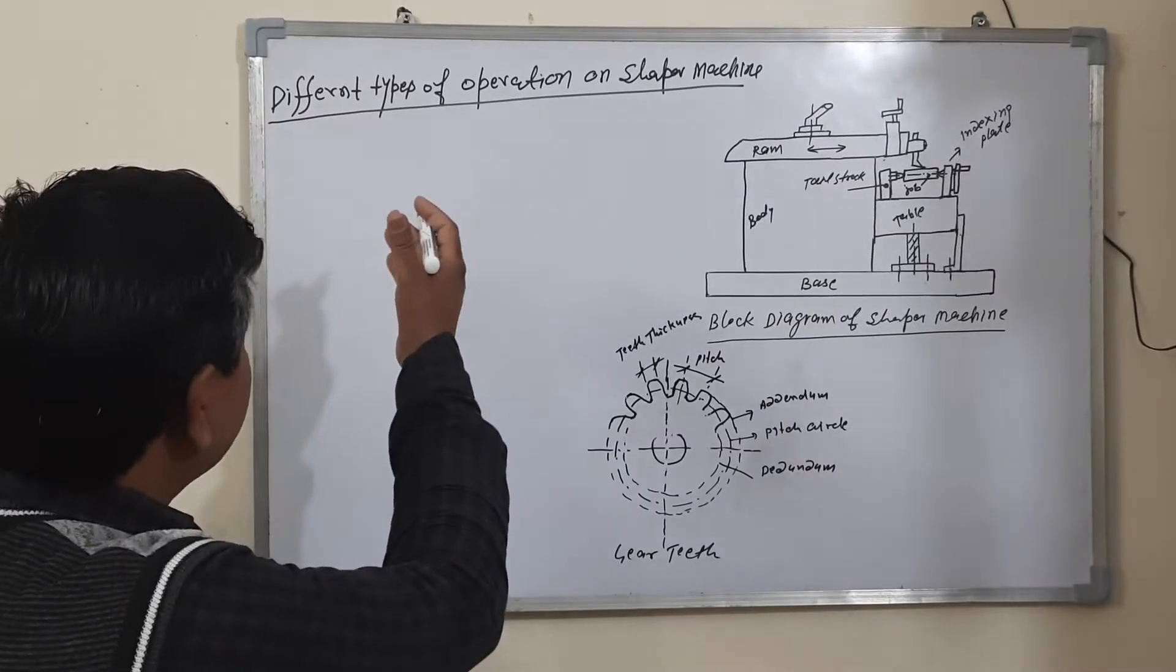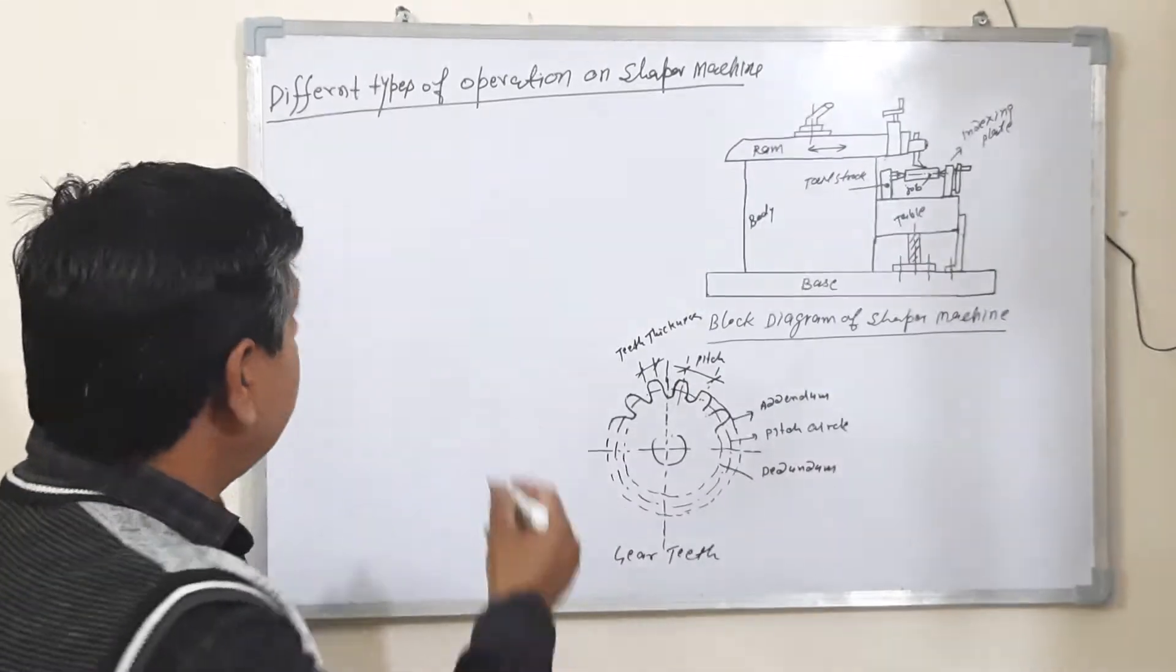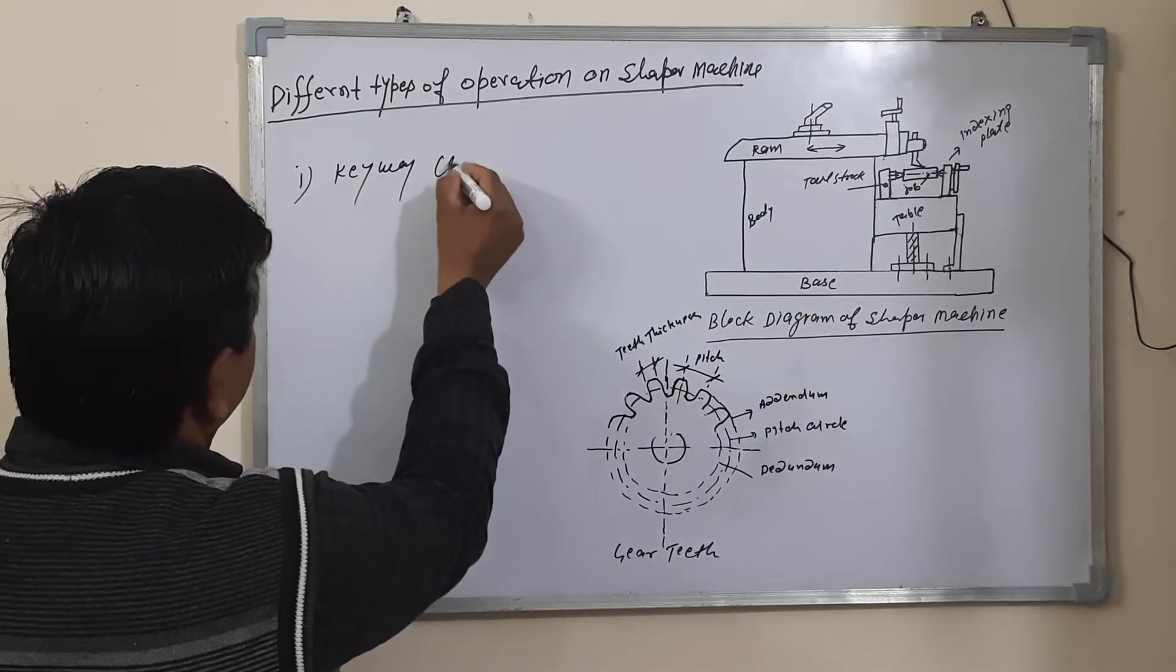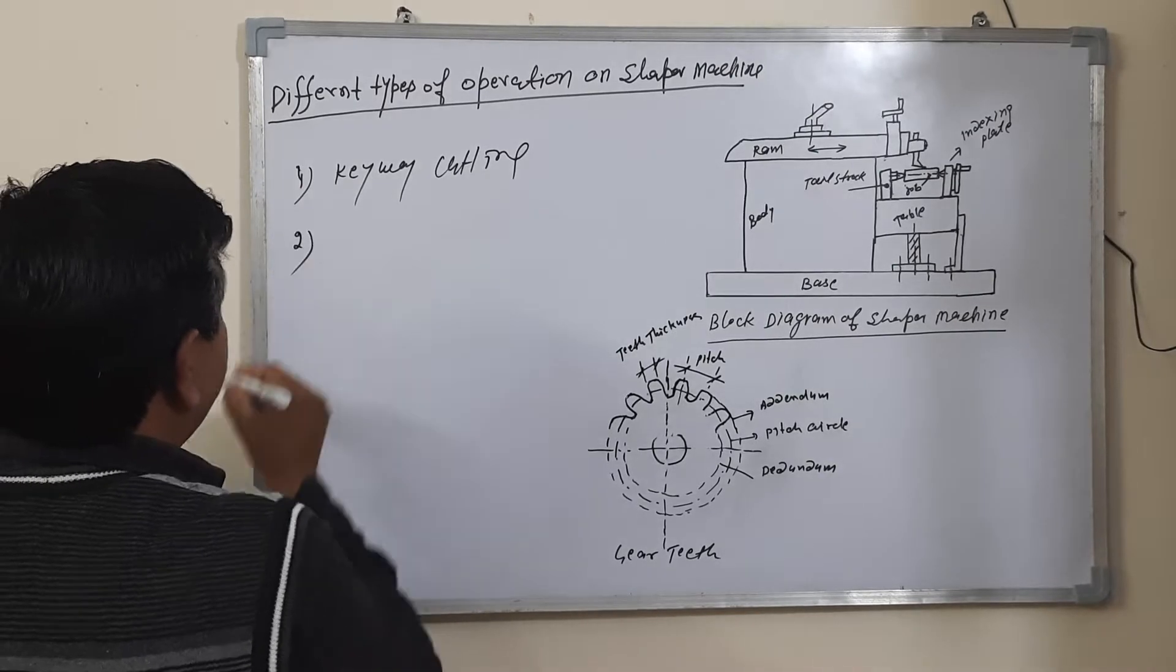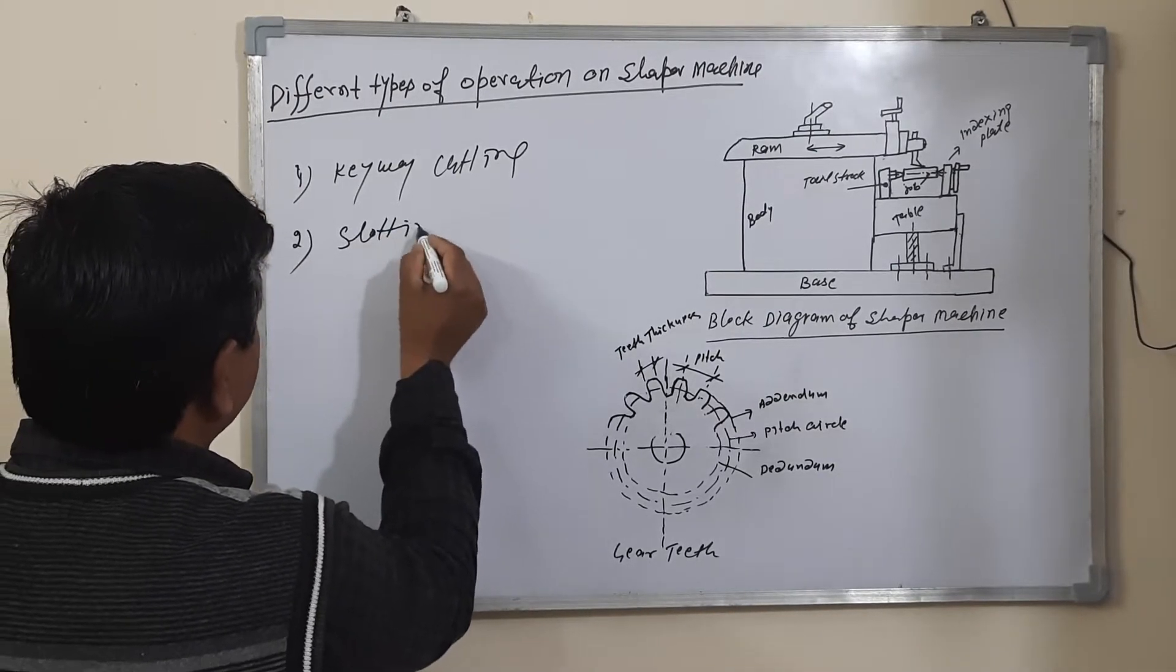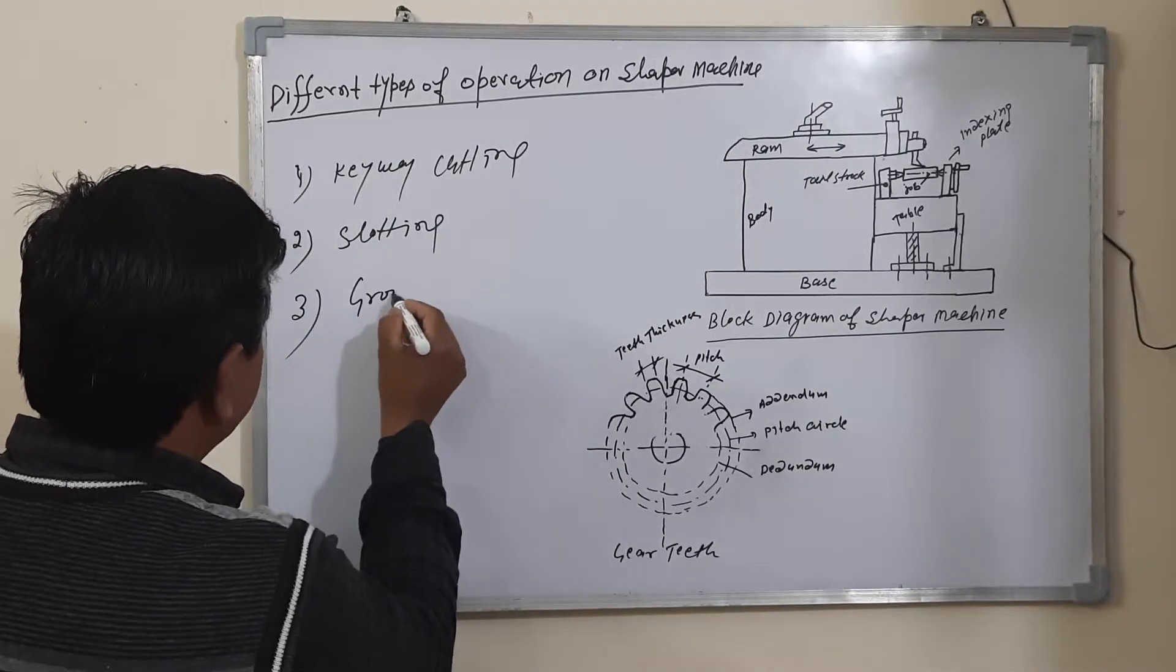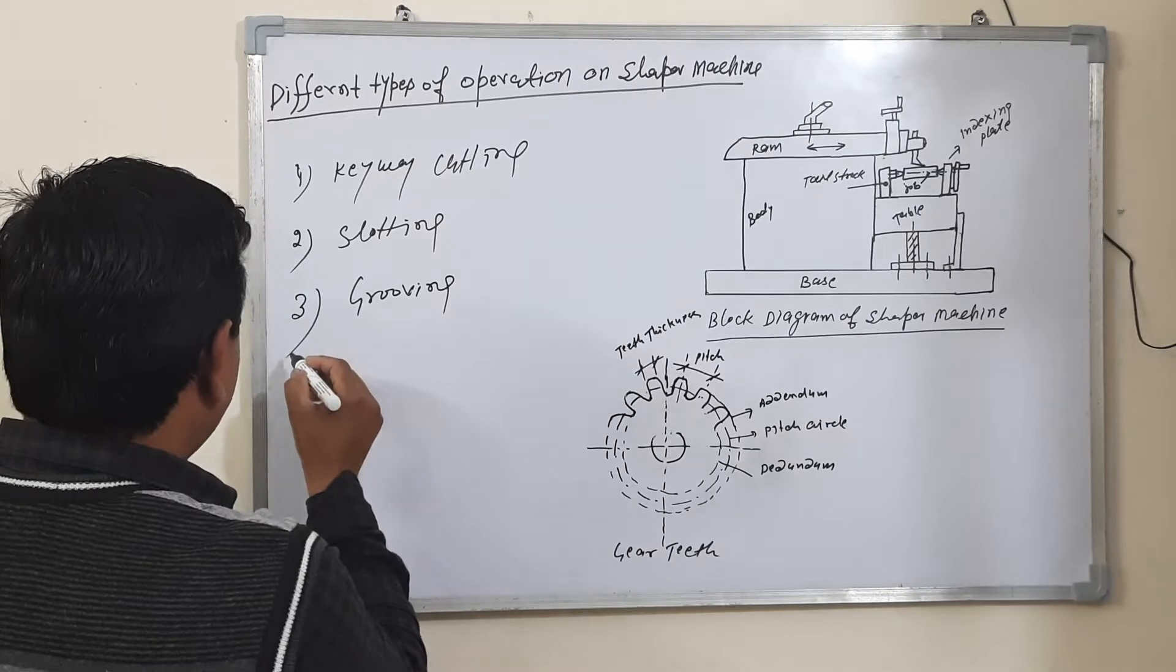My topic is different types of operation on a shaper machine. Number one is keyway cutting, number two is slotting, number three is grooving, and number four is gear cutting.